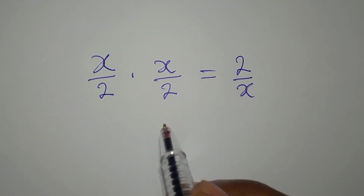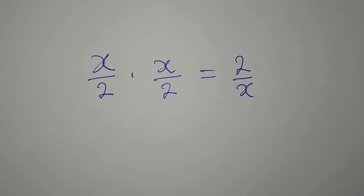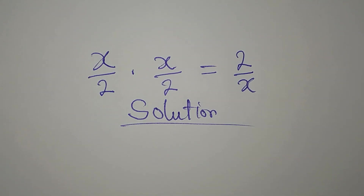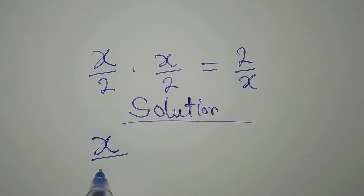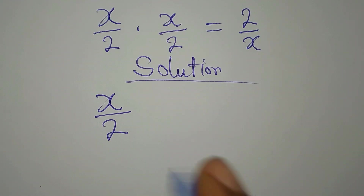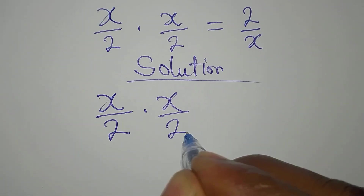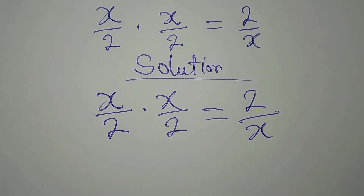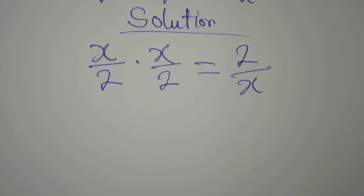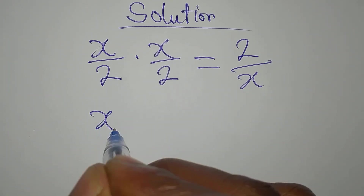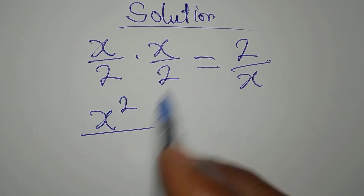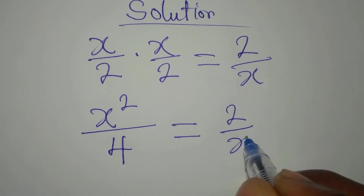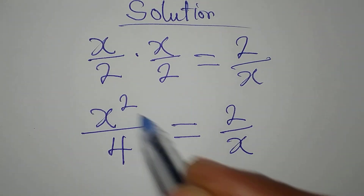Let's provide the solution to this problem very quickly. We have x over 2 multiplied by x over 2 equals 2 over x. This is simple — x times x will give x squared, and 2 times 2 will give 4, so we have x squared over 4 equals 2 over x.